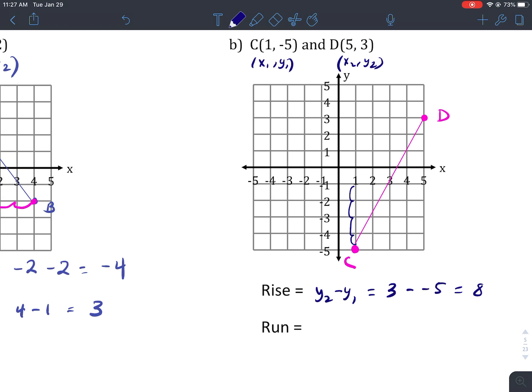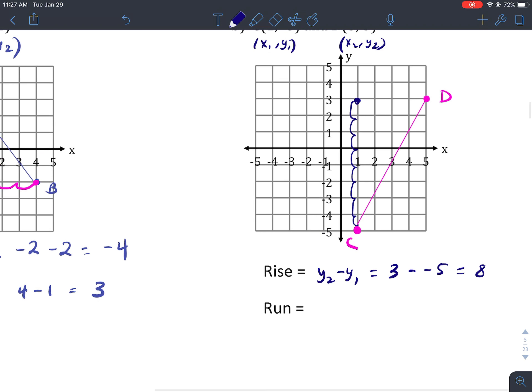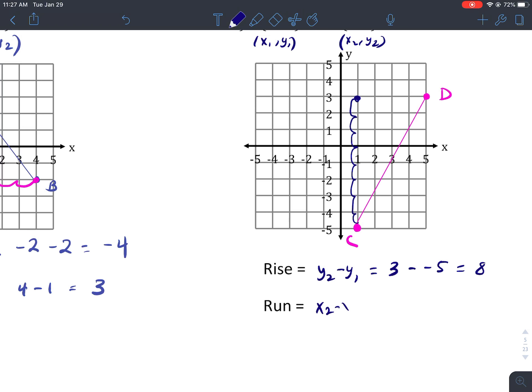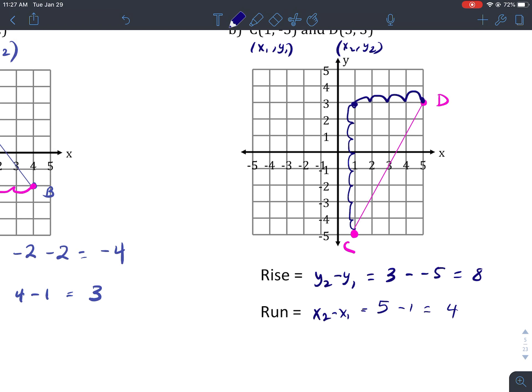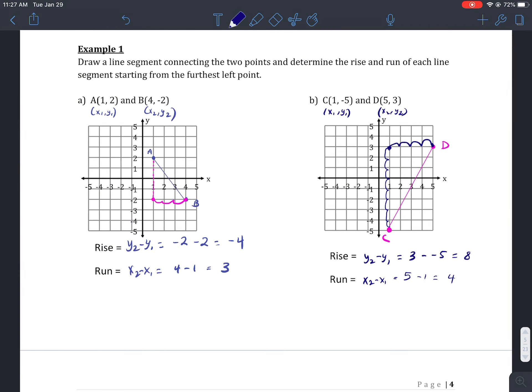So I know I have to go up 1, 2, 3, 4, 5, 6, 7, 8 units to get to the same level as point D. Now I've got to go a little bit over to the right, so I have to use my run formula of x2 minus x1 to figure out how far that is. So 5 minus 1 equals 4. So I know I have to go 1, 2, 3, 4 units to the right to get to the same point as point D. Okay, and that's how I would figure out my rise and my run.